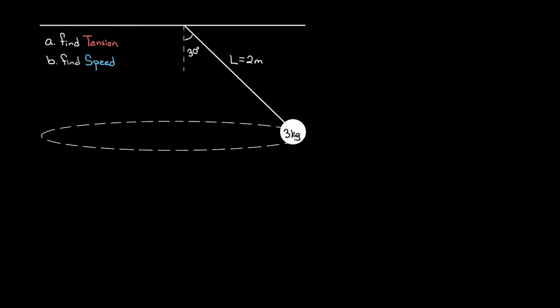These are our given variables: the mass is three kilograms, the length of the rope is two meters, and this rope is making an angle of 30 degrees with respect to the vertical line. This problem is a classic for good reason — if you don't have a clean conceptual understanding of centripetal forces and a problem-solving strategy, this problem will expose you. The strategy is: first, draw a quality force diagram for the object.